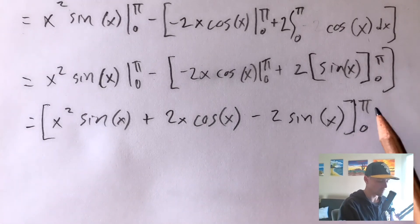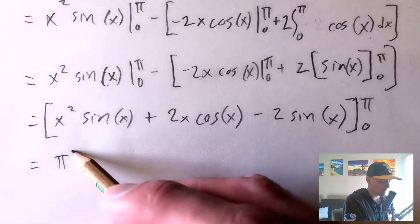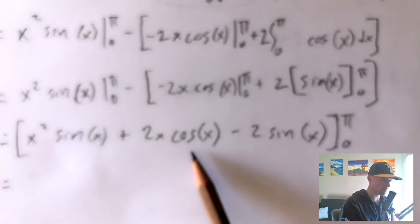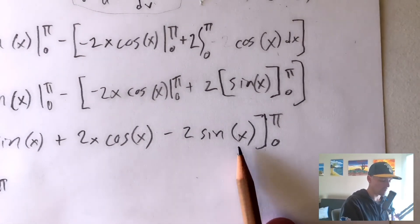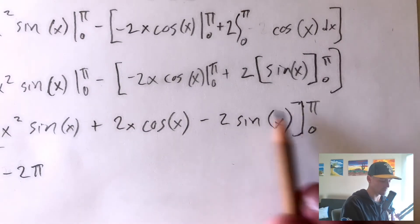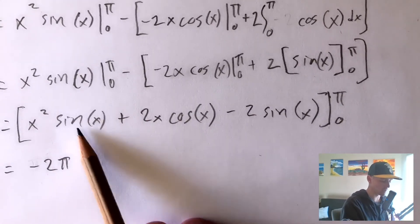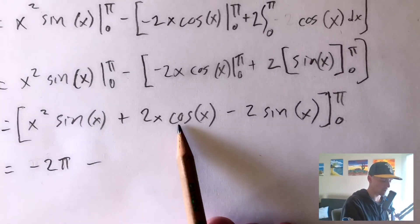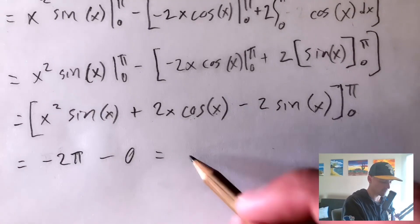To evaluate from zero to pi, we plug in pi first. Pi squared times sine of pi — sine of pi is zero, so this whole term is zero. Then 2 times pi times cosine of pi — cosine of pi is negative one, giving us negative 2pi. And 2 times sine of pi is also zero. So plugging in pi gives us negative 2pi. Then plugging in zero: the sine terms go to zero, and 2 times zero times cosine zero is also zero. So evaluating from zero to pi gives us negative 2pi.